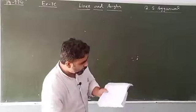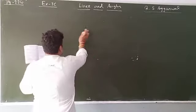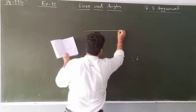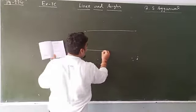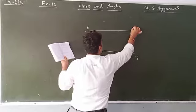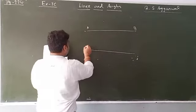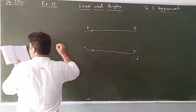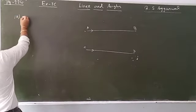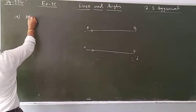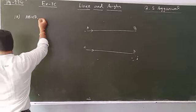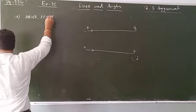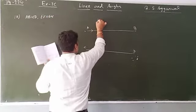For question 17, the given data is: AB is parallel to CD, and EF is parallel to GH. These are the two pairs of parallel lines.